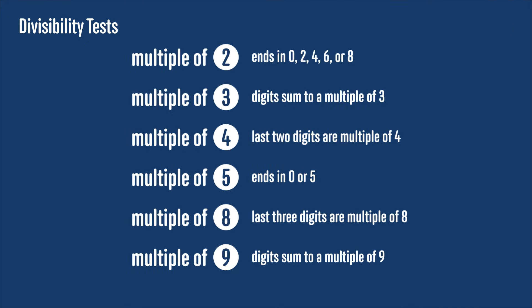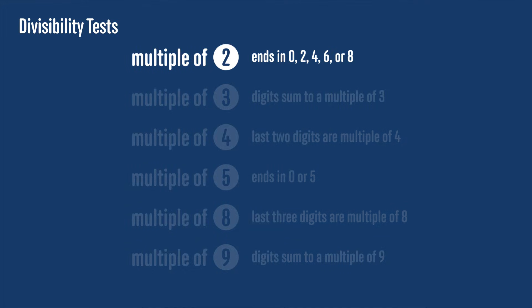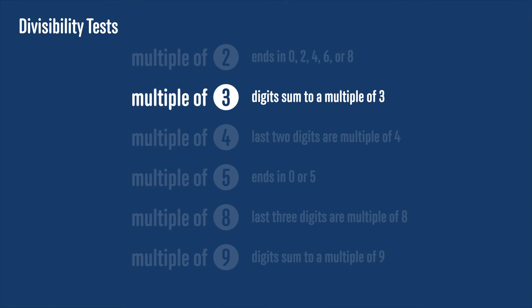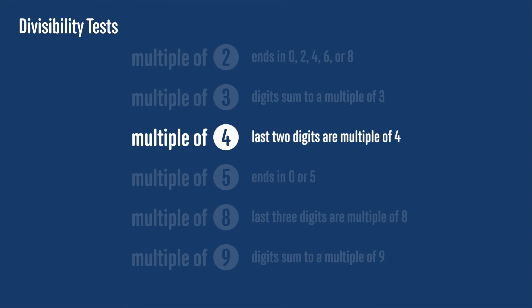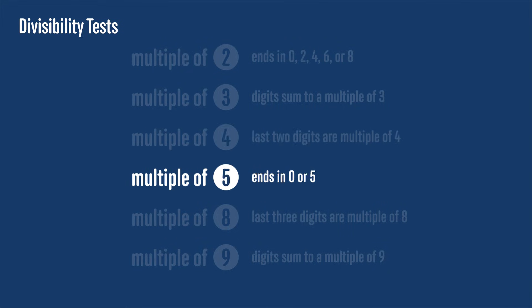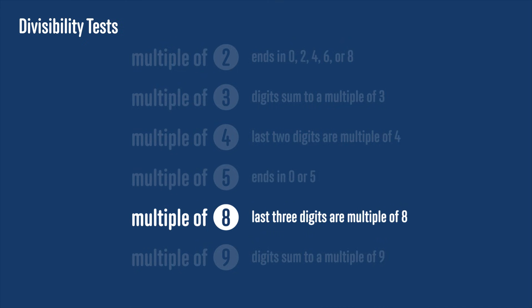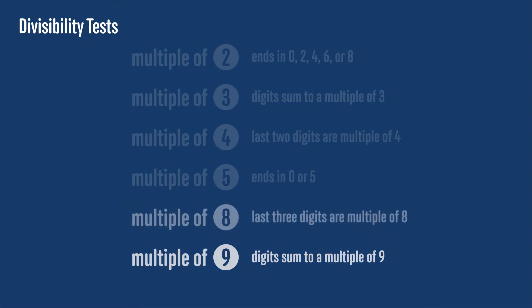To recap: for divisibility by 2, check if the last digit is 0, 2, 4, 6 or 8. For divisibility by 3, check if the digit sum is divisible by 3. For divisibility by 4, check if the number formed by the last two digits is a multiple of 4. For divisibility by 5, check if the last digit is 0 or 5. For divisibility by 8, check if the number formed by the last three digits is a multiple of 8. For divisibility by 9, check if the digit sum is divisible by 9. These are by far the most important tests. Tests for other numbers are less useful because it's usually just as quick to do a long division.